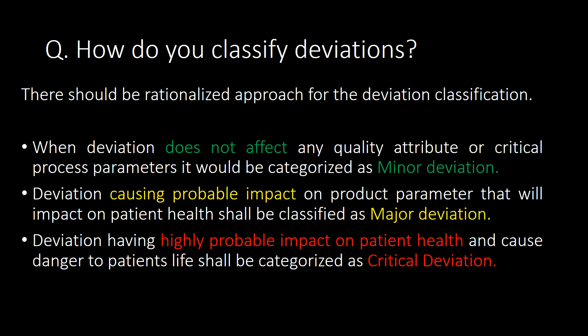How do you classify deviations? There should be a rationalized approach for deviation classification. When a deviation does not affect any quality attribute or critical process parameters, it is categorized as a minor deviation. When a deviation causes probable impact on product parameters that will impact patient health, it is classified as a major deviation. Deviations having a highly probable impact on patient health and causing danger to a patient's life are categorized as critical deviations.